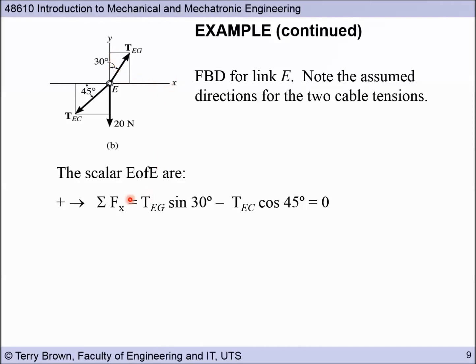So looking at our components here, we have the force TEG. So we're looking at forces in the horizontal direction. Our component here for TEG is this one. Okay. So this time our angle triangle is defined adjacent to the angle that we're given. So this time we'll have TEC cos 45, and all of that is equal to zero. So that's our first equation.